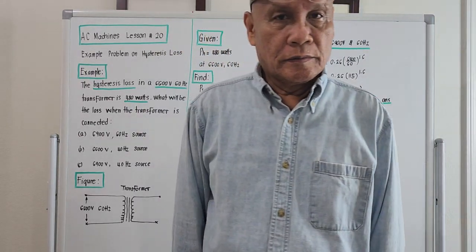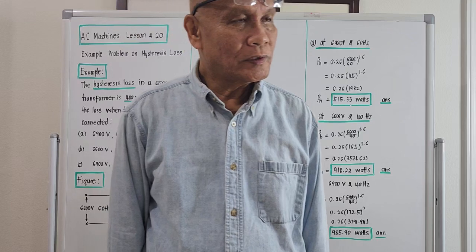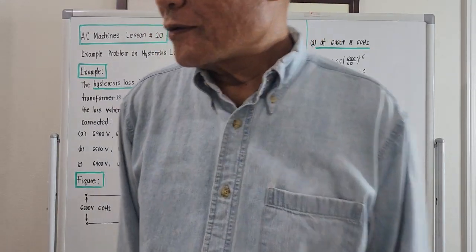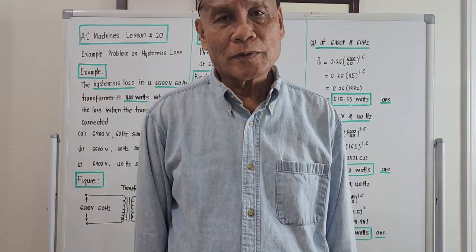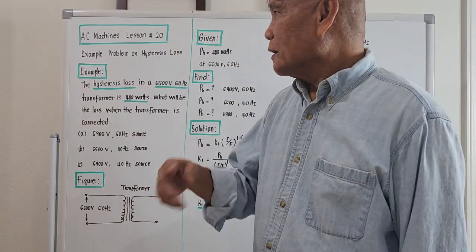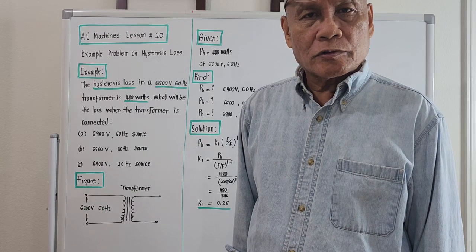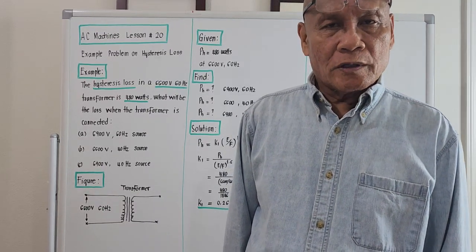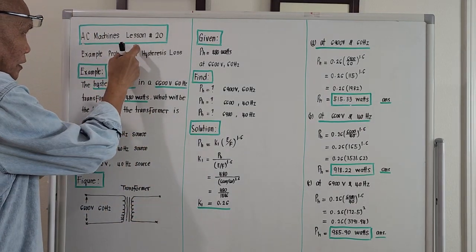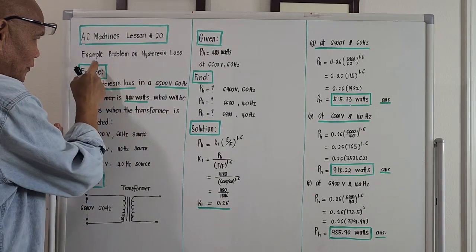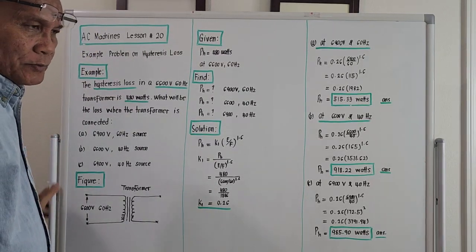Good morning, this is Professor David J. de los Reyes. It is September 24, 2023, and the time is around 12:52 AM. My topic for discussion will be a continuation of my long video format discussion on AC Machines. We are now on Lesson Number 20. The title of the topic this morning will be an example problem on the computation of the so-called hysteresis loss of a transformer.